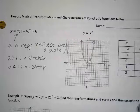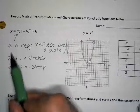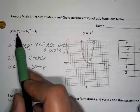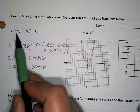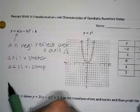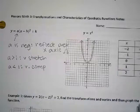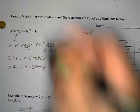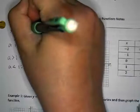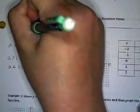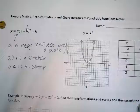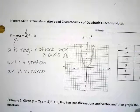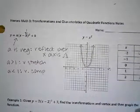So the number in the front can do three different things. The number inside the parentheses can do two things: it can move the graph to the left, and it can move the graph to the right.